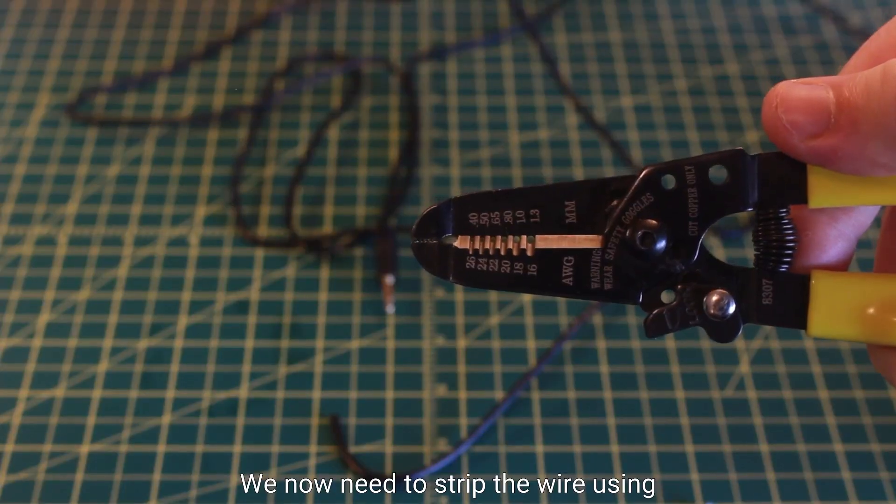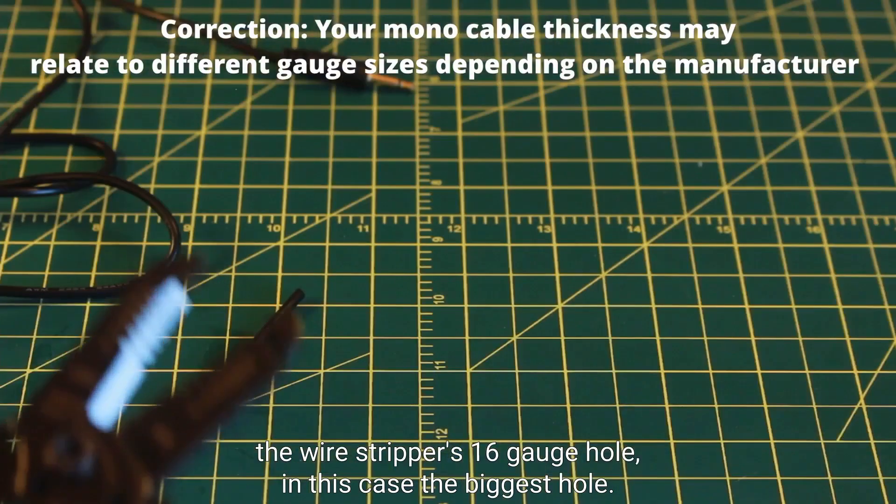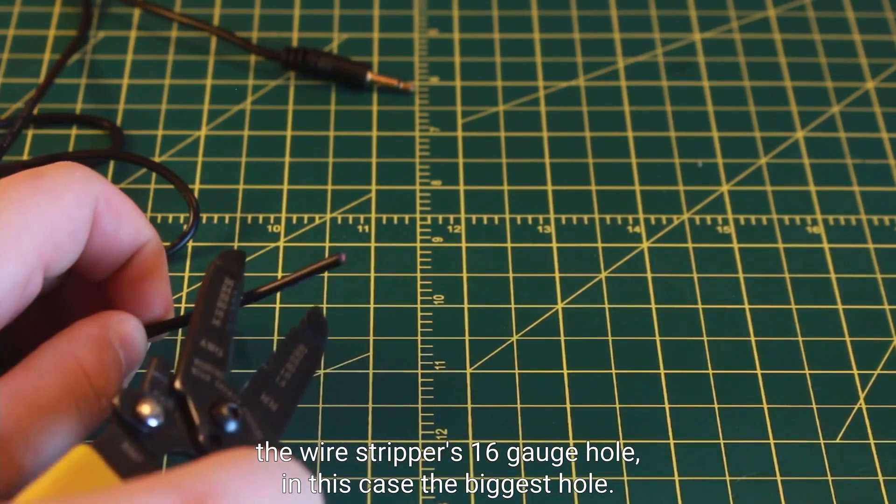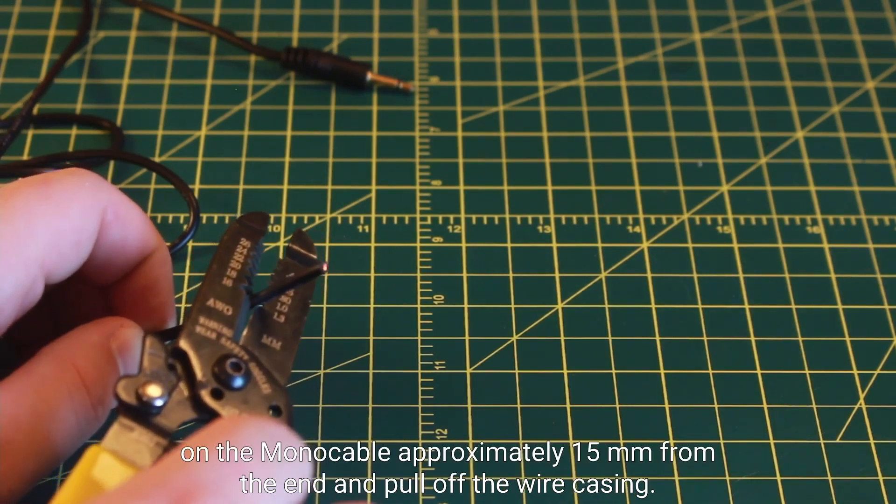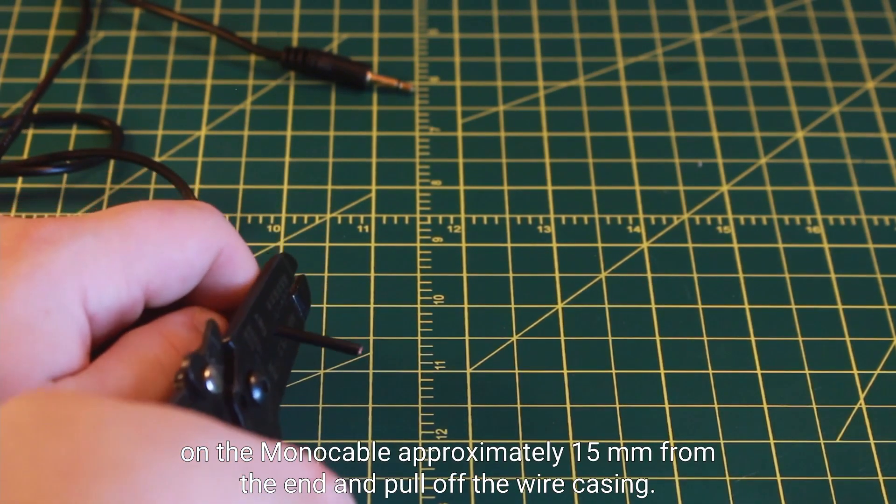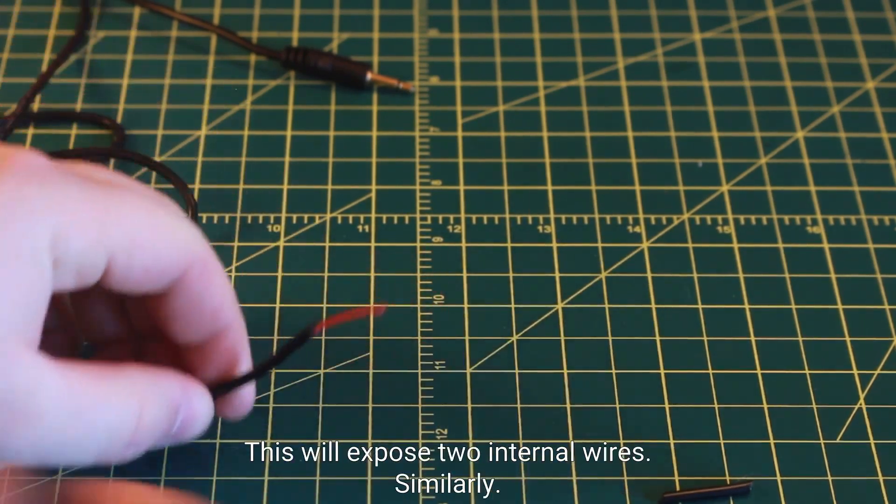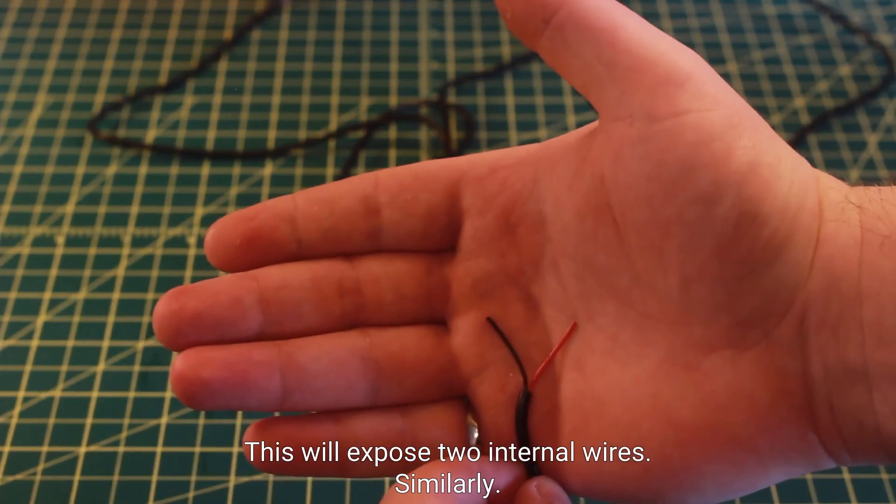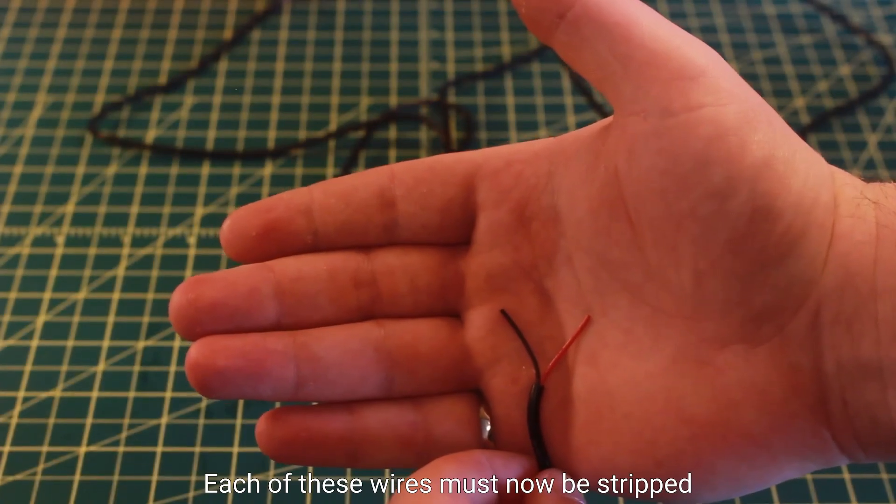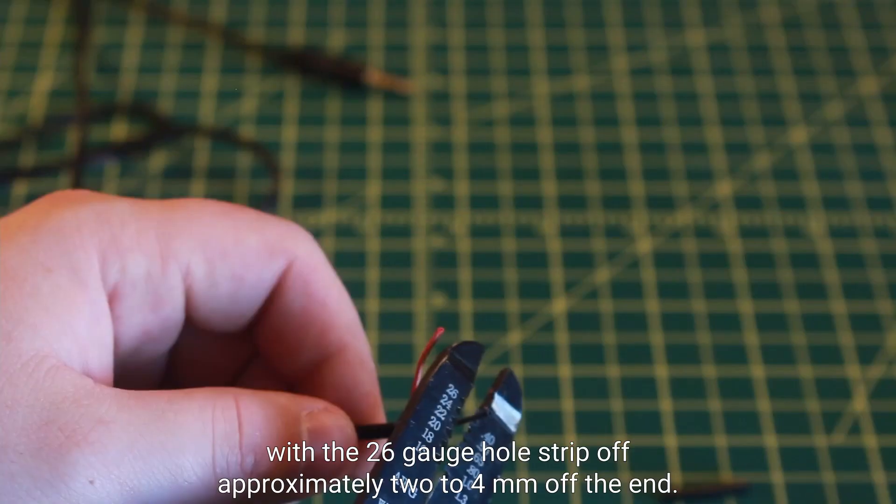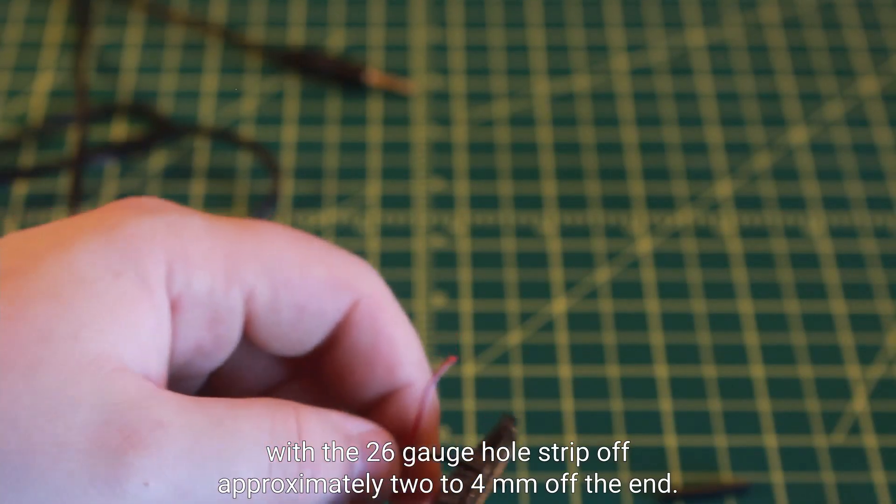We now need to strip the wire using the wire strippers 16 gauge hole, in this case the biggest hole. Gently squeeze the wire strippers on the mono cable approximately 15 millimeters from the end and pull off the wire casing. This will expose two internal wires. Similarly, each of these wires must now be stripped with the 26 gauge hole. Strip off approximately two to four millimeters off the end.